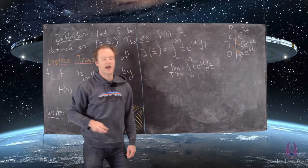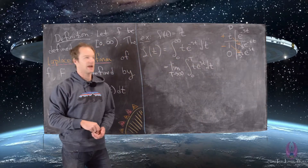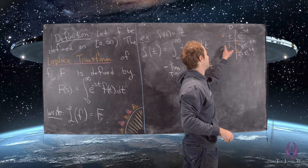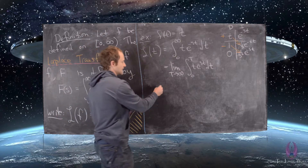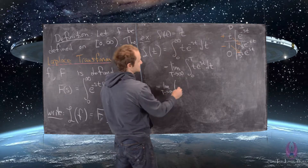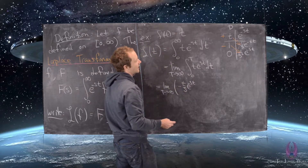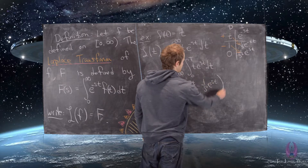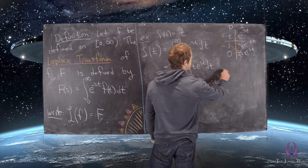We combine along the diagonals and alternate signs: positive, then negative. This gives us the limit as T goes to infinity of negative t over s times e to the minus st, minus one over s squared times e to the minus st, evaluated from zero to T.